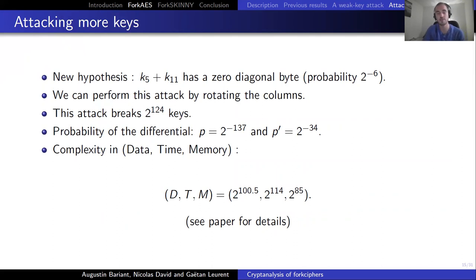We have two more attacks, actually. The second one has a different weak key hypothesis. We only suppose that K5 plus K11 has one zero diagonal byte, which happens with probability 2 to the power minus 6. We can perform this attack by rotating the columns, thus attacking 4 times more keys. And in total, we can break 2 to the power 124 keys. The probability of the differential is 2 to the power minus 137, and the probability of the second pair passing the differential, if the first pair passes, is 2 to the power minus 34. So the final complexity in time is 2 to the power 114.